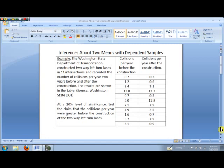In this example, the Washington State Department of Transportation constructed two-way left-turn lanes at 11 intersections and recorded the number of collisions per year two years before and after construction. And you see the results there in our table.